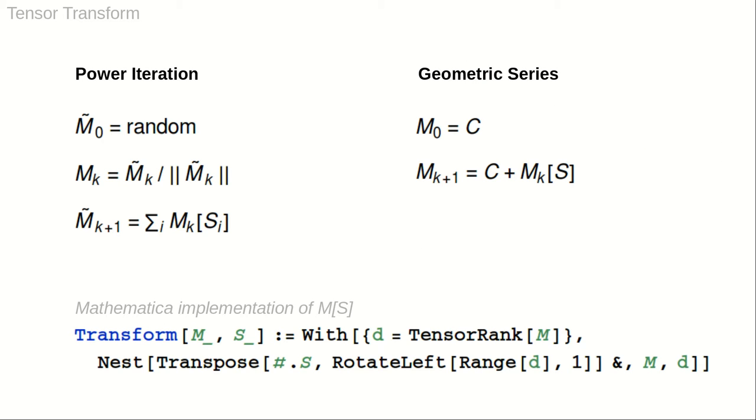The new iteration methods feature a key exploit that we haven't properly pointed out so far. Neither the power iteration or the geometric series requires the construction of the system matrix.